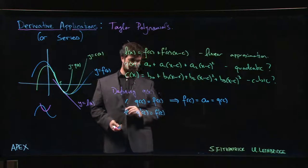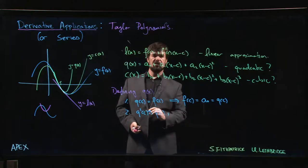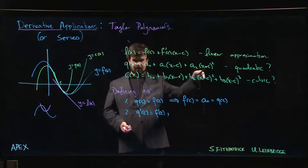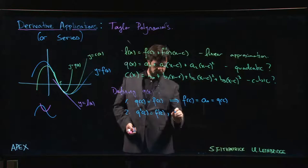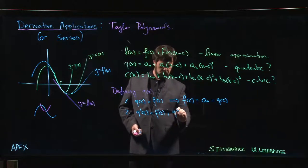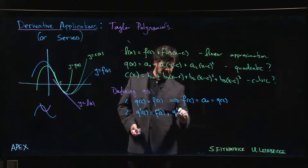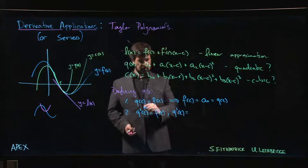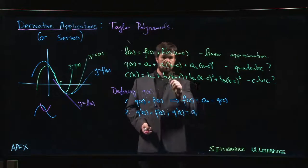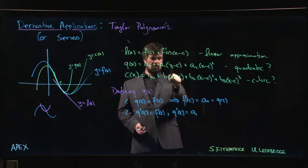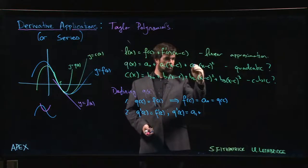But what's Q prime of c? Well, we can take the derivative. This is a constant term so it goes away. Q prime of x is going to be a₁ times the derivative of x minus c, which is just 1, so this is just a₁. We can use the power rule plus chain rule: 2 comes down in front, 2 times a₂ times x minus c times 1, the derivative of the inside is just 1.